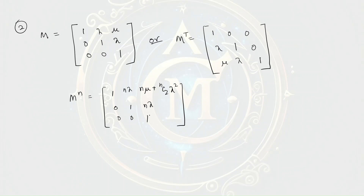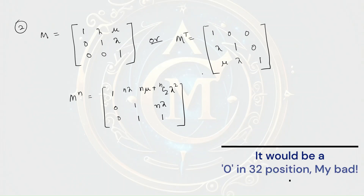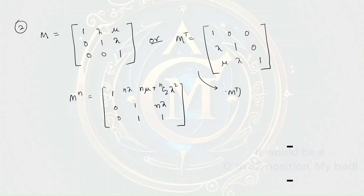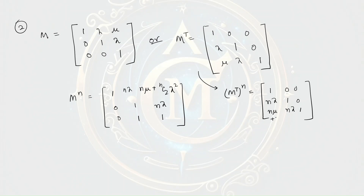You have to remember this pattern. Similarly, if you calculate M transpose to the power n, it will also follow the same rule with entries: 1, 1, 1; 0, 0, 0; n·lambda, n·lambda, n·mu plus nC2·lambda squared. This type of matrix has been directly asked in JEE Mains paper, so you need to remember these shortcuts.